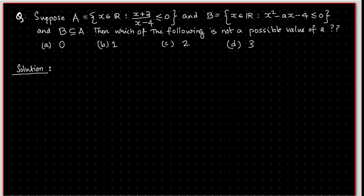We have two sets A and B such that B is contained in A. We need to find out which of the following is not a possible value of 'a': 0, 1, 2, or 3. Let's dive deeper into what kind of sets A and B really are.